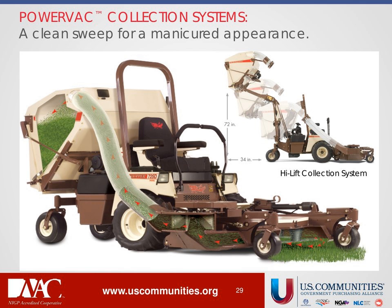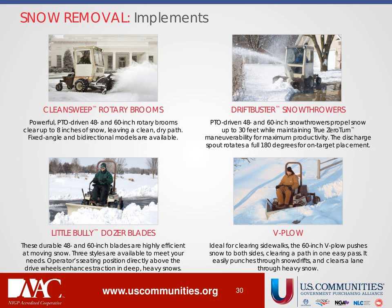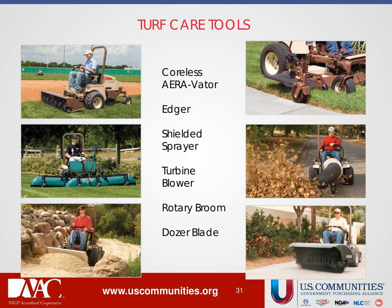Grasshopper offers an array of cutting deck options and we manufacture many of our implements. The power back collection system runs off the cutting deck via belt with no auxiliary motor to service — available in two bag, three bag, and metal hopper style. We also have our own high lift option that lifts six feet into the air and over 30 inches to the rear, so you can easily dump clippings into a trailer or truck. For snow removal, the front mount Grasshopper has rotary brooms, snow throwers, dozer blades, V plow in 48 and 60 inch options, and a fully enclosed winter cab with heat and lights. Turf renovation implements include a coreless aerator, edger, shielded sprayer, turbine blower, dozer blade for dirt work, and rotary broom for sidewalks and parking lots.